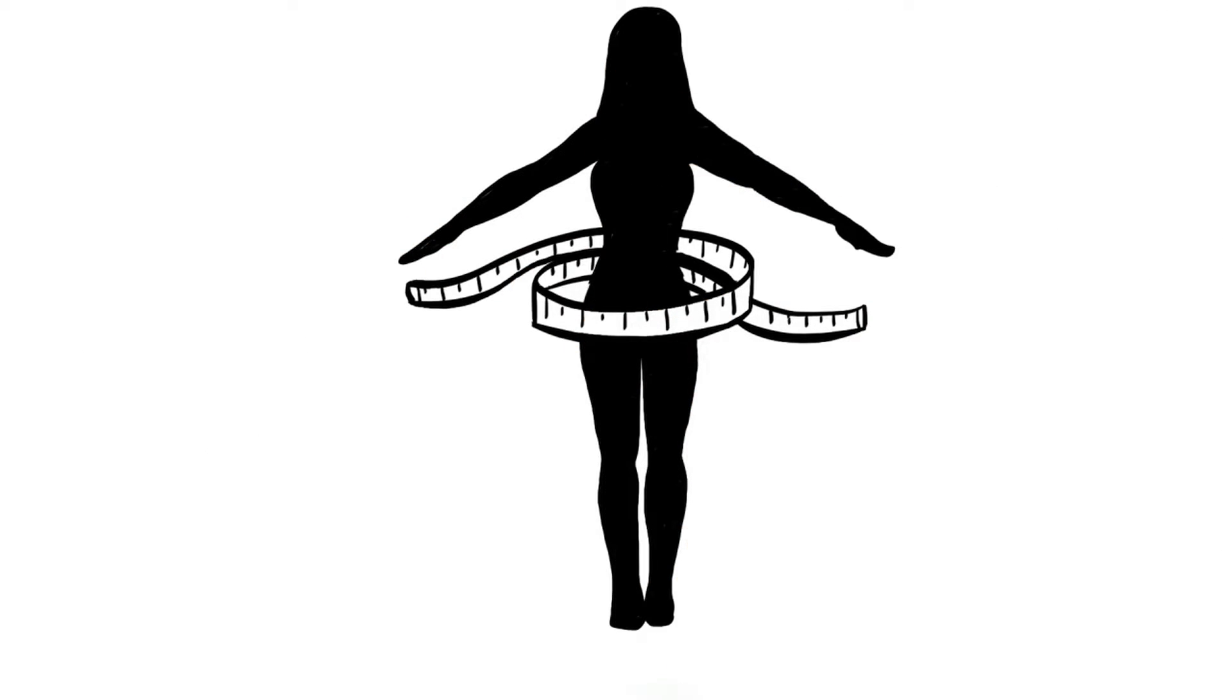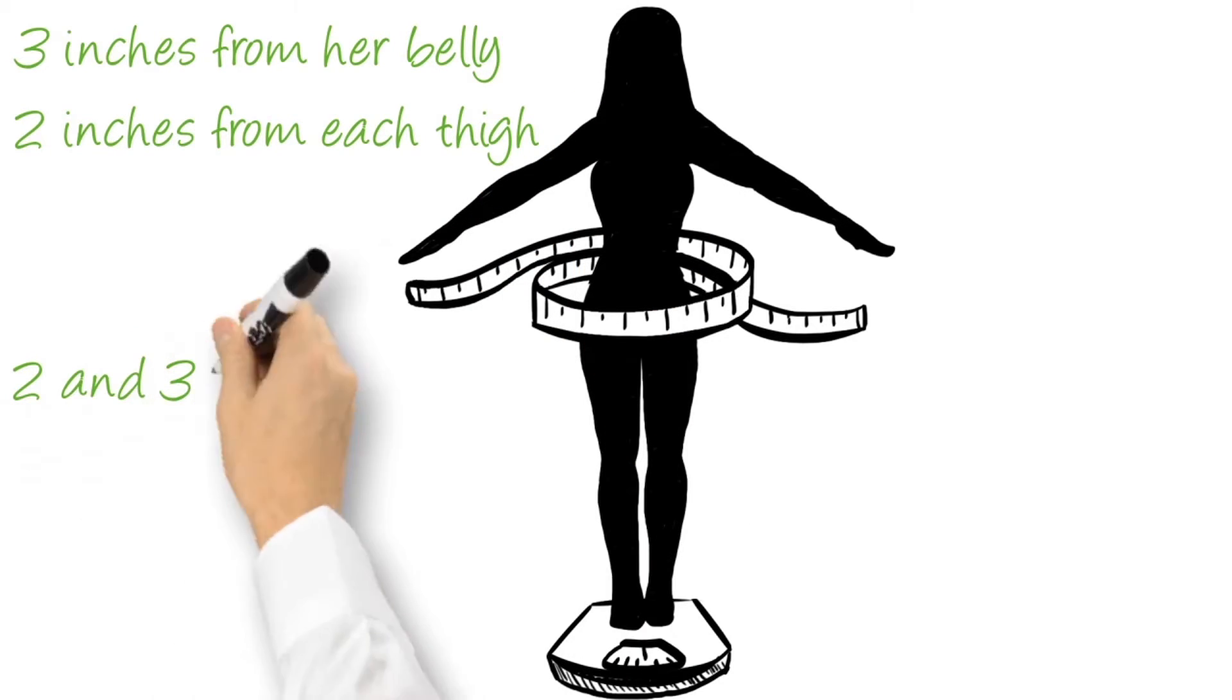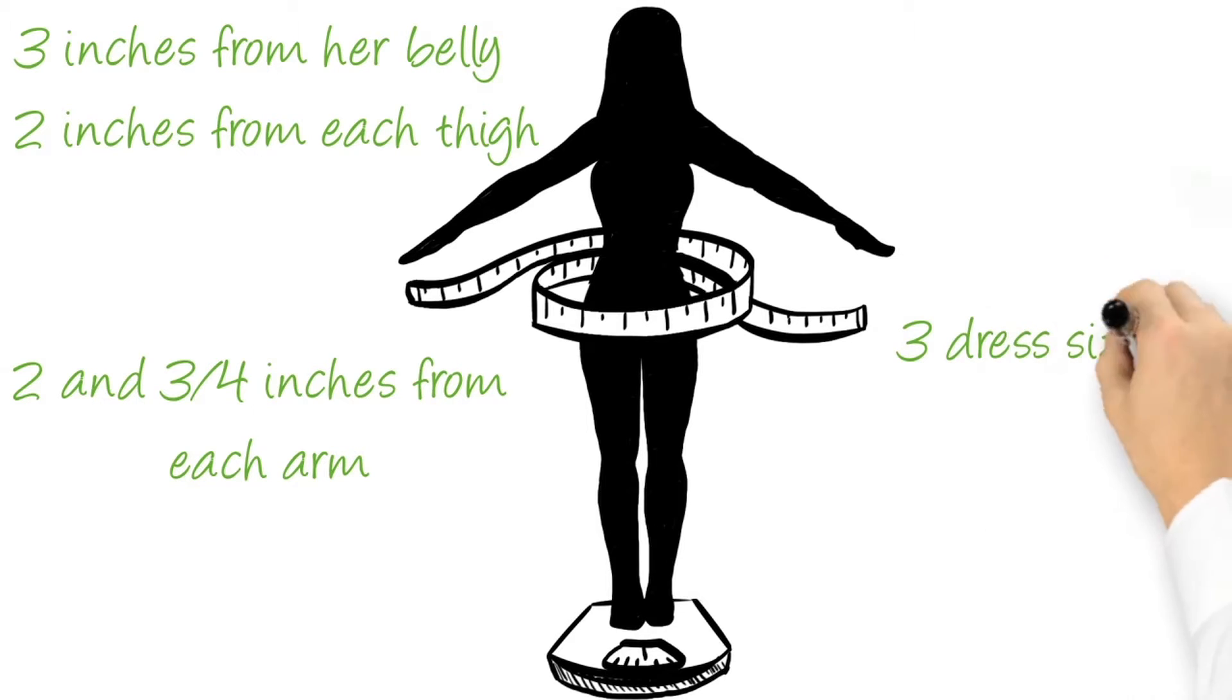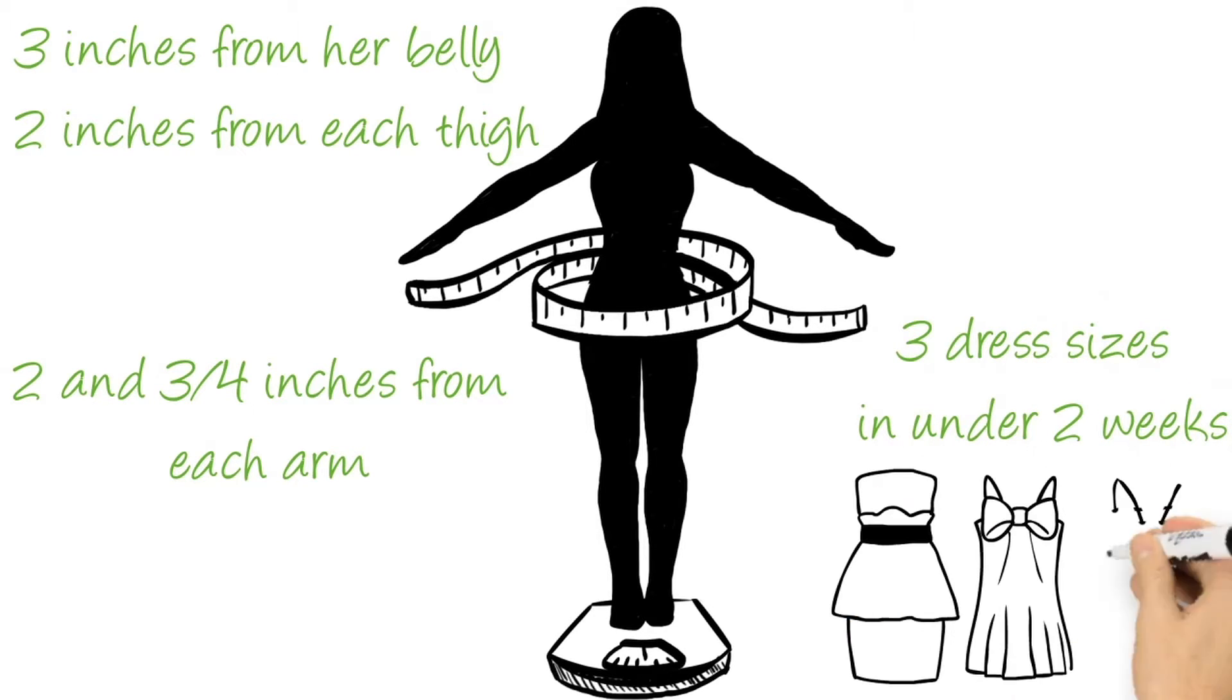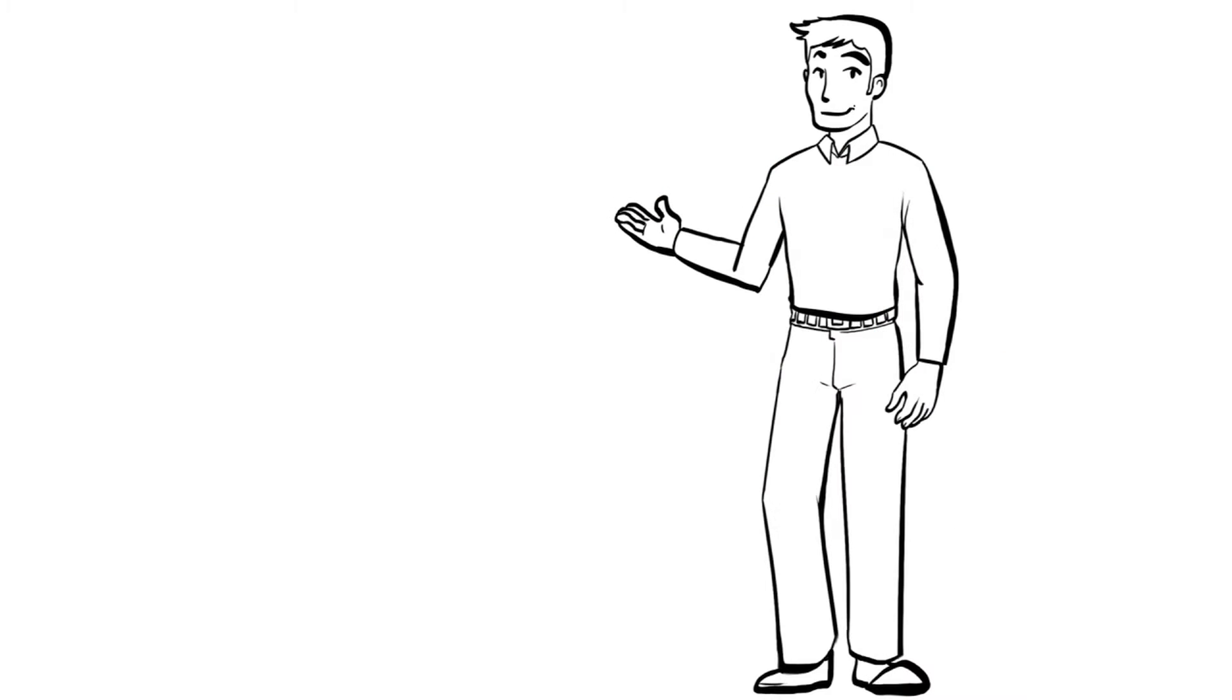Now, to give you an idea of the scope of weight loss efficacy, the five key fat loss factors that I'm about to reveal to you have seen Charlotte lose three inches from her belly, two inches from each thigh, and two and three quarters of an inch from each of her arms. She dropped an amazing three dress sizes in a little under two weeks. That's quite an accomplishment. And guess what? She didn't have to diet. She didn't have to exercise. And she didn't have to take supplements either.